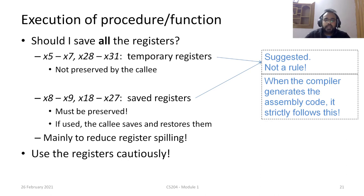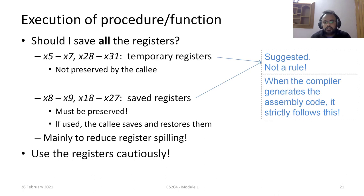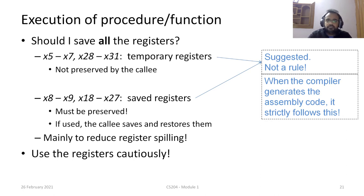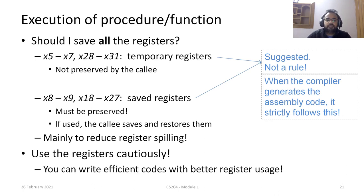This convention is suggested by the architects to reduce register spilling. Whenever we write something to memory and retrieve it back we need explicit load and store instructions, which increase program size. Basically it is just data transfer — we are not working with the data itself, so these instructions do not directly help us get the operation done. Use registers cautiously and you can write more efficient code with better register usage.